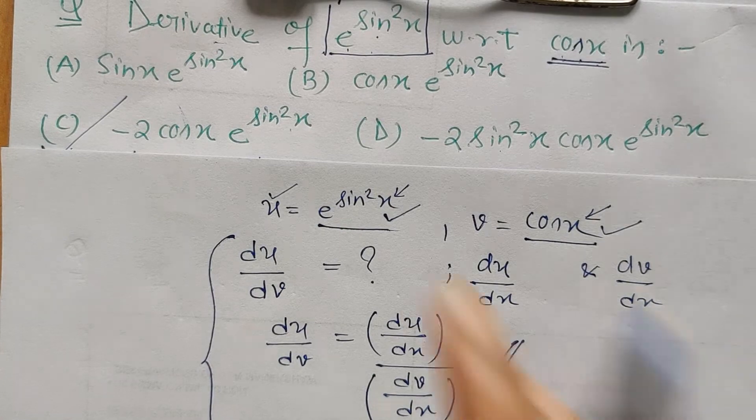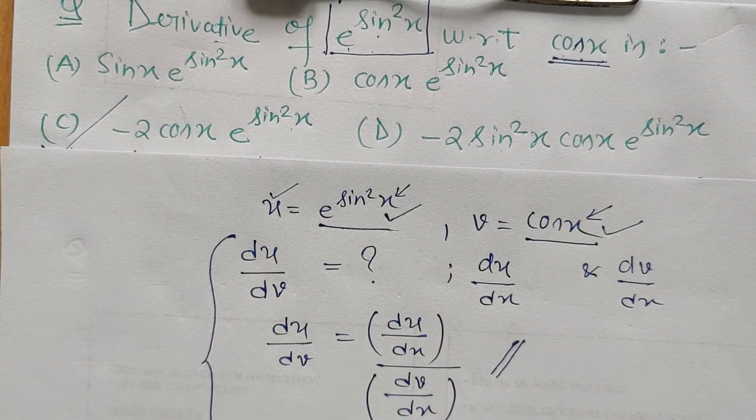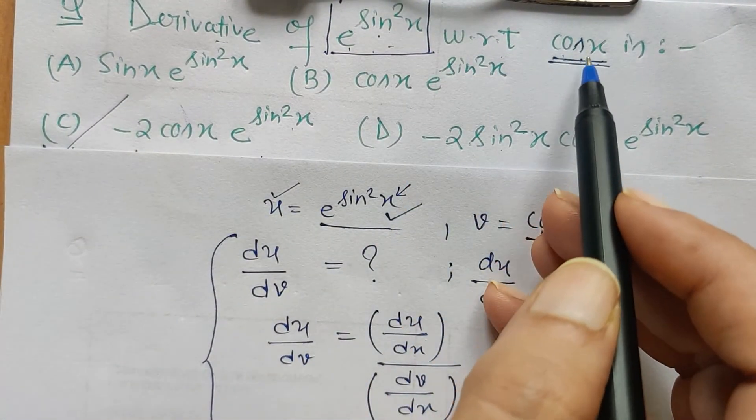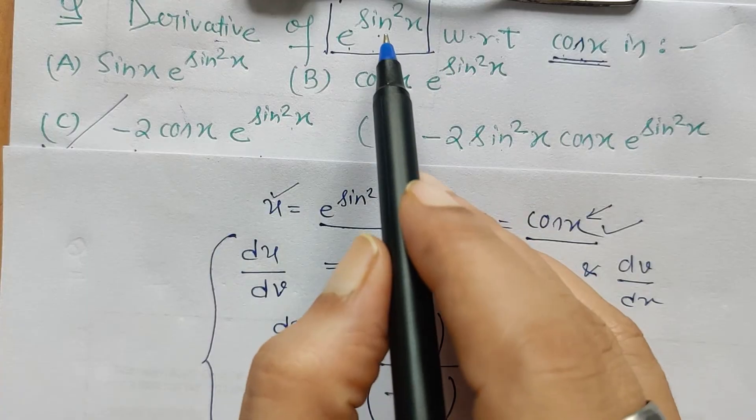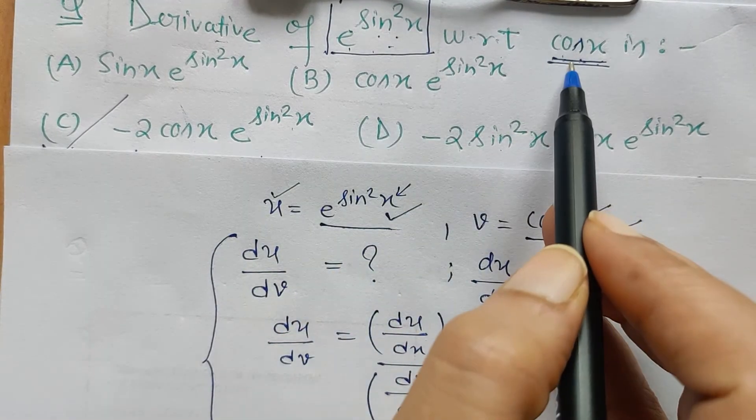So this is the derivative of e to the power sine square x with respect to cos x. I hope this method is clear to everyone. And in this fashion you can differentiate any given function with respect to any other form of function. You just have to keep this in mind: this is to be taken as some variable u and this to be taken as some variable v.